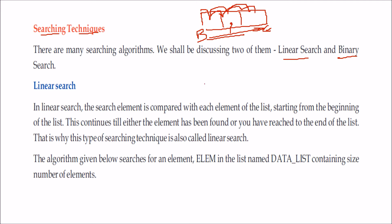This is called the linear search. We'll see an algorithm which will search an element called ELEM from the list called the data list. Let us go ahead.